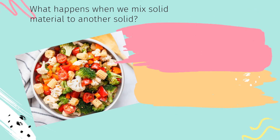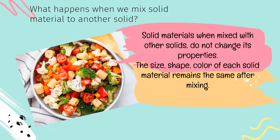So what happens when we mix solid material with another solid? Solid materials when mixed with other solids do not change their properties. The size, shape, and color of each solid material remains the same after mixing.